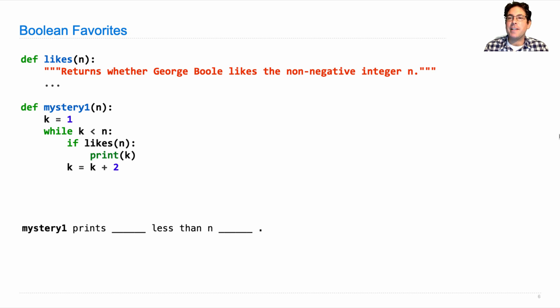Let's imagine that there is a function likes which takes in a non-negative integer n and returns whether George Boole likes that number. We don't have the implementation and it would be quite hard to reconstruct it, but we have to imagine that it exists.